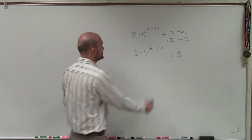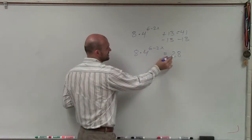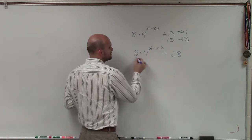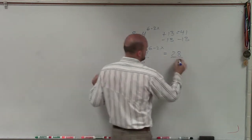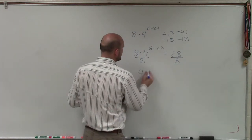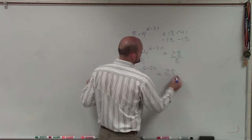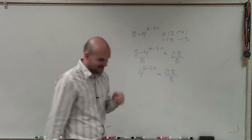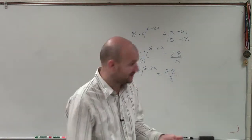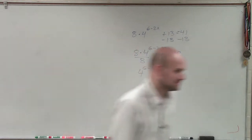So now I need to take this, and now I need to undo the 8. So I'm going to divide by 8. So now I have 4 raised to the (6 minus 2x) equals 28 divided by 8. And we notice that that does not go in there evenly. But for right now, I'm just going to leave that.